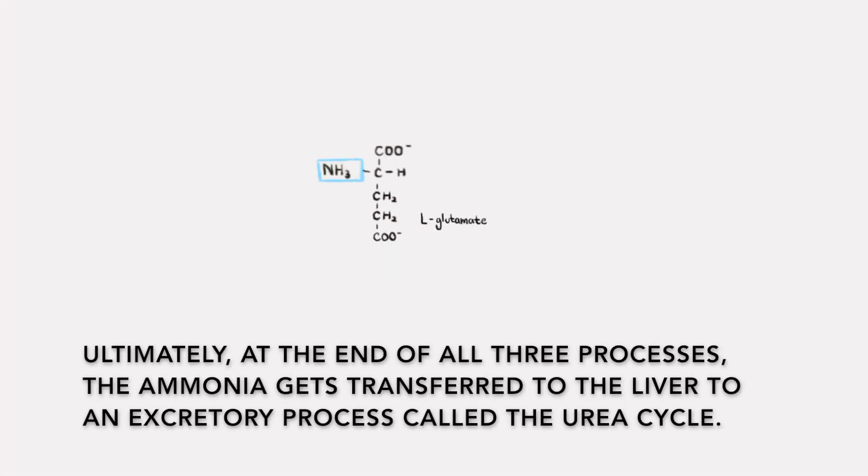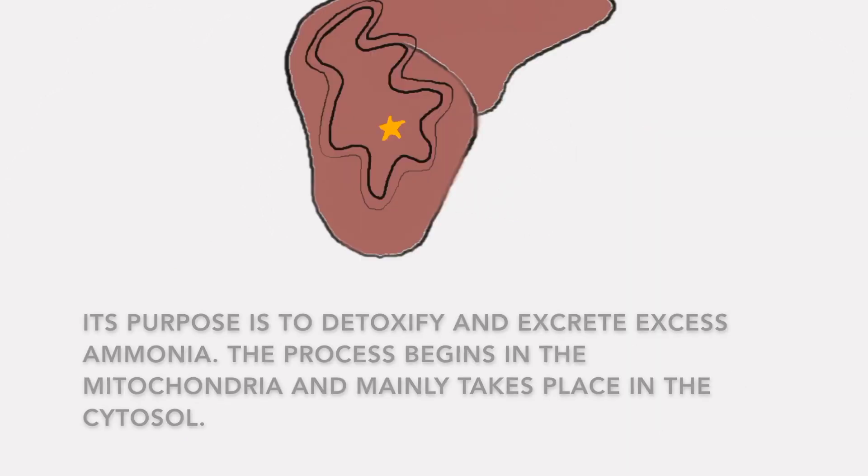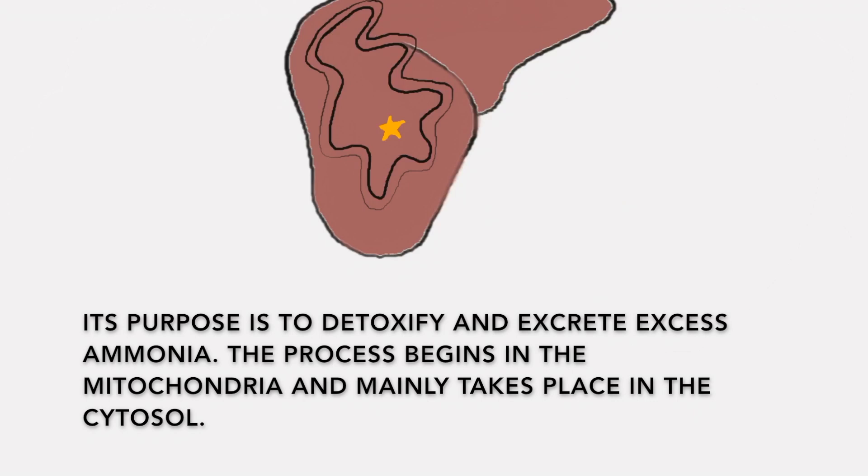Ultimately, at the end of all three processes, the ammonia gets transferred to the liver to an excretory process called the urea cycle. Its purpose is to detoxify and excrete excess ammonia. The process begins in the mitochondria and then mainly takes place in the cytosol.